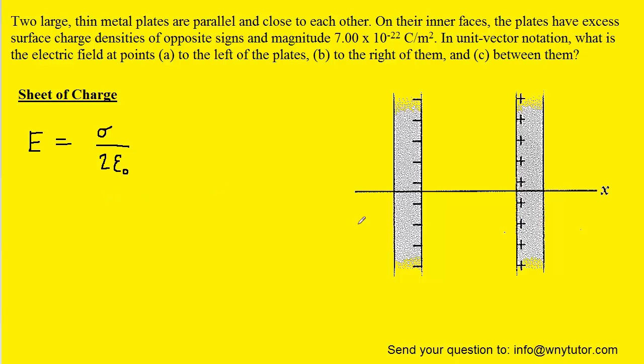So in essence, we can consider these two thin metal plates to be non-conducting sheets of charges. And as long as we make that assumption that they're non-conducting sheets of charges, then we're going to stick with using this formula, which also was derived from Gauss's law earlier in the chapter.